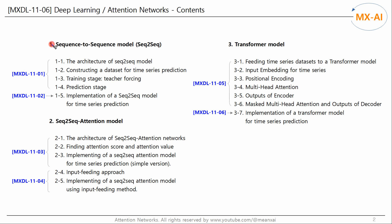In the last two chapters, we predicted time series using sequence-to-sequence-based models. In this video, we will predict time series using a transformer model that only uses attention rather than a sequence model.